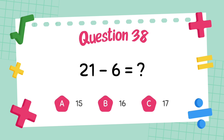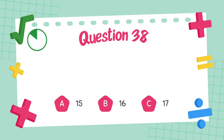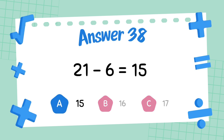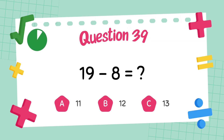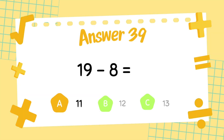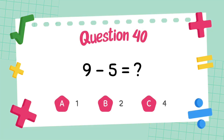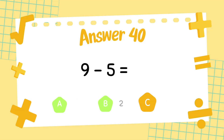What is 21 minus 6? The answer is 6. What is 19 minus 8? The answer is 11. What is 9 minus 5? The answer is 5.